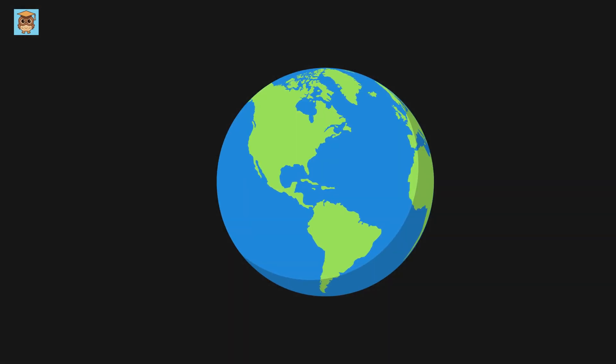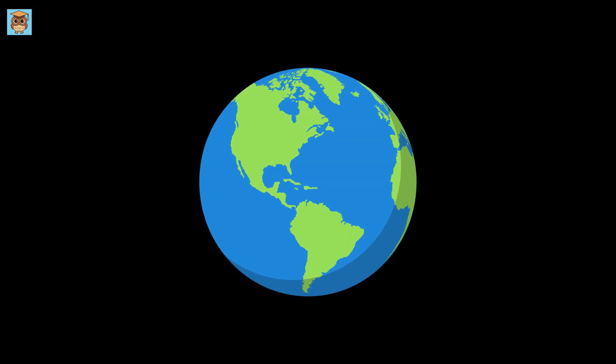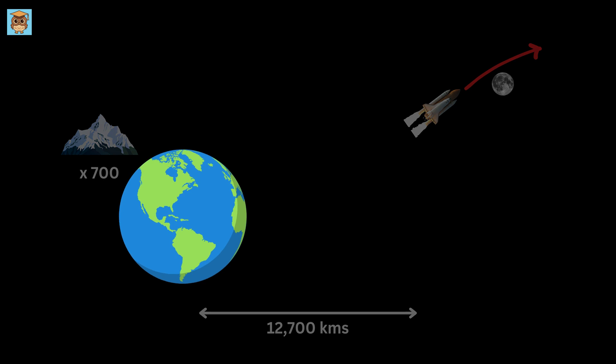But wait, what about the Earth itself? Our entire planet is about 12,700 kilometers across. That's over 700 Mount Everests side by side. Now, let's leave Earth.